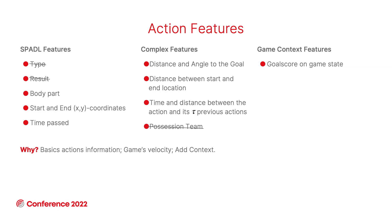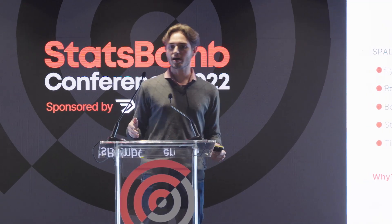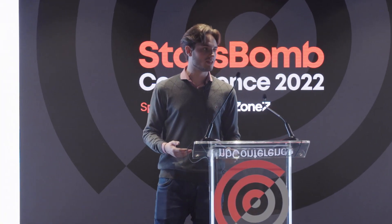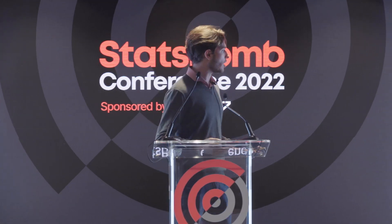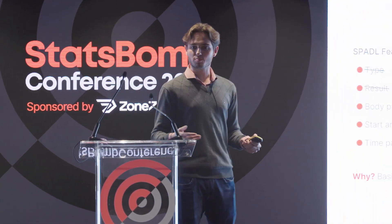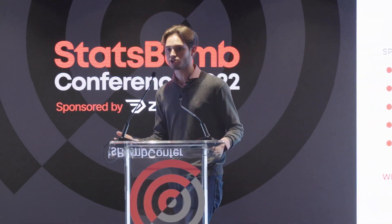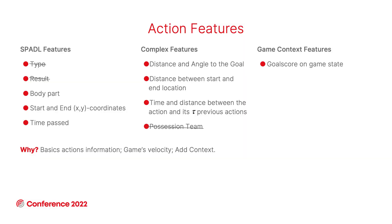However, we made some changes to the spatiotemporal and complex features. In the spatiotemporal features, we removed the type and the result — because if Van Dyke makes a wrong pass, of course that will lead to a ball recovery by nature of a wrong pass, so we remove it. Also, in the complex features, we only consider the possession team, since that is our label.